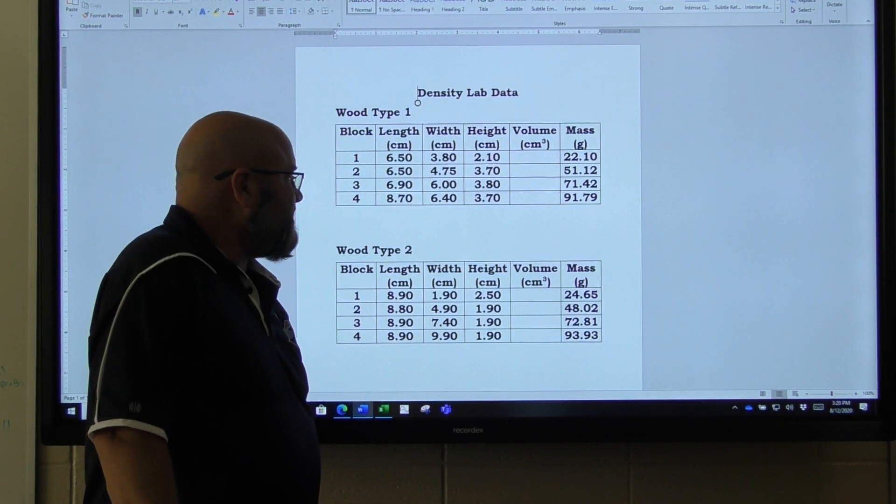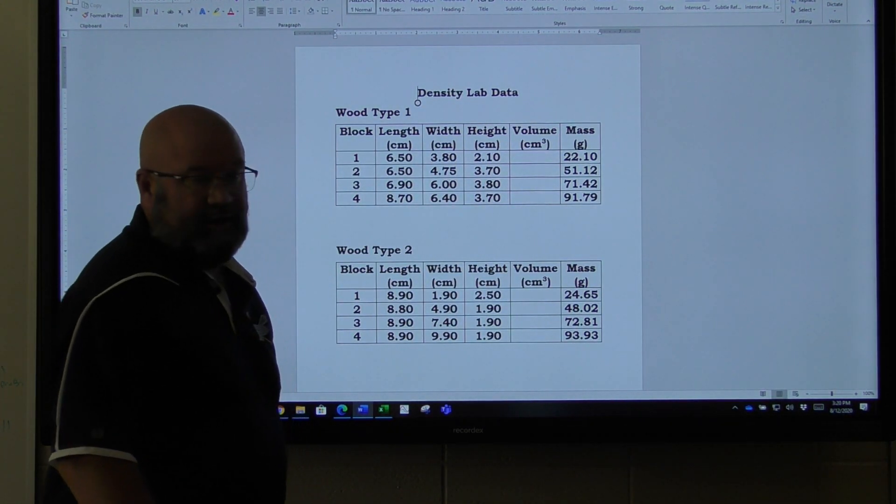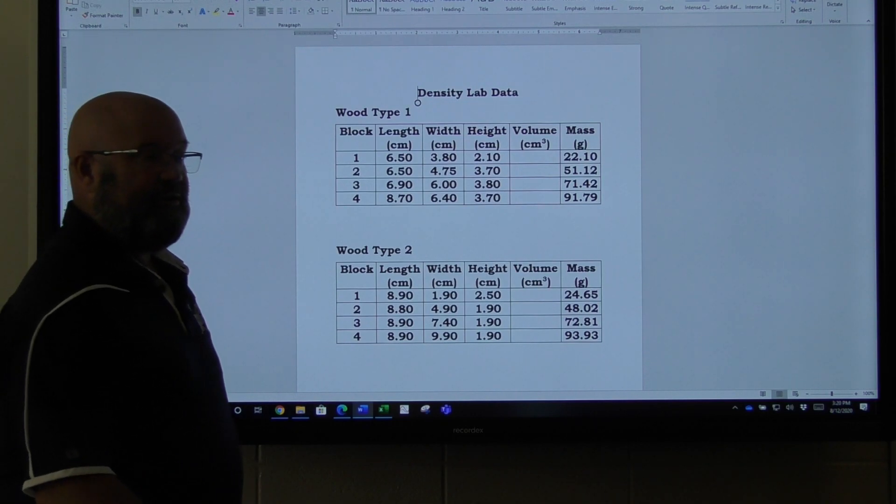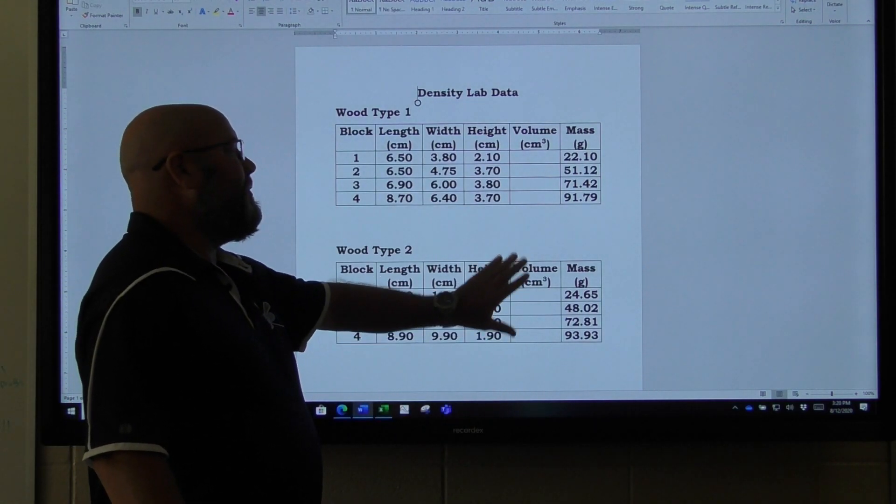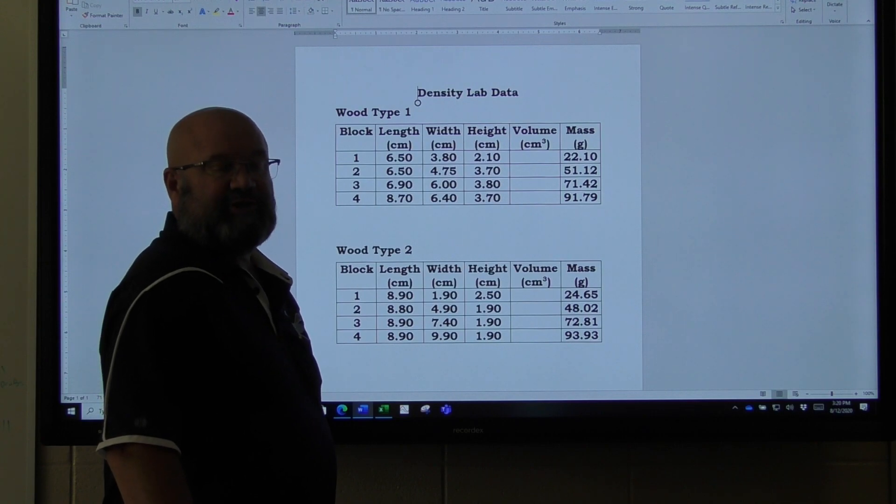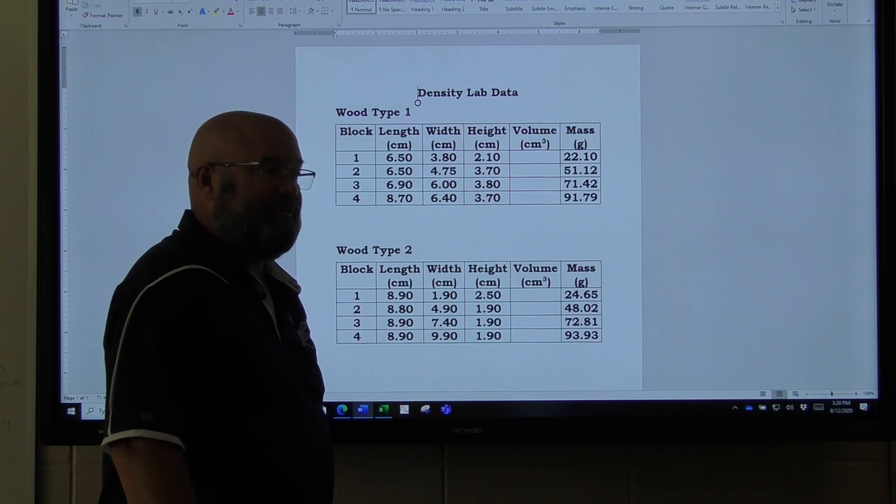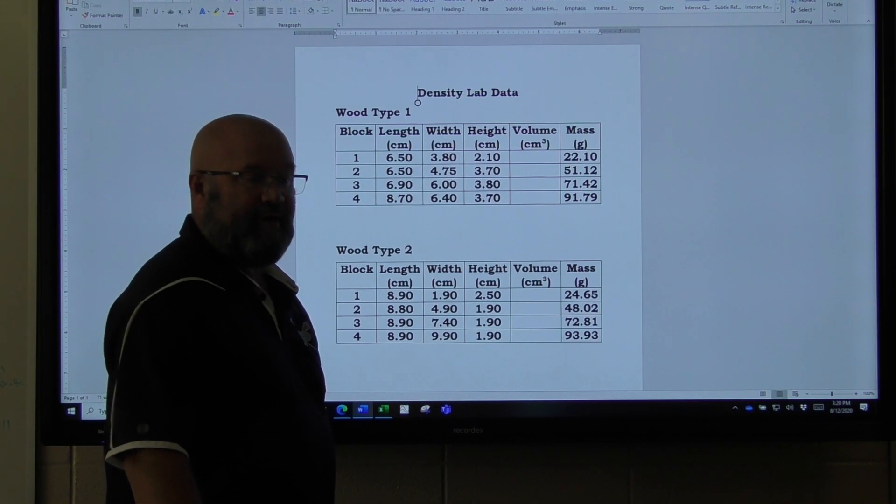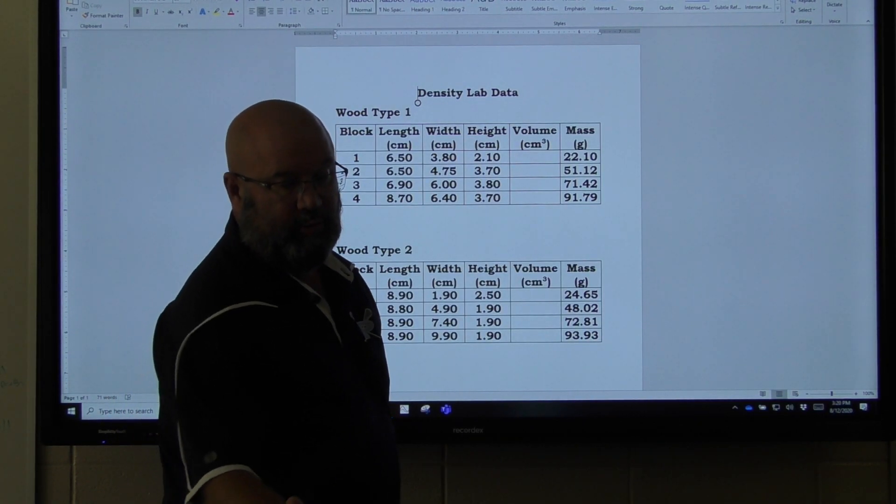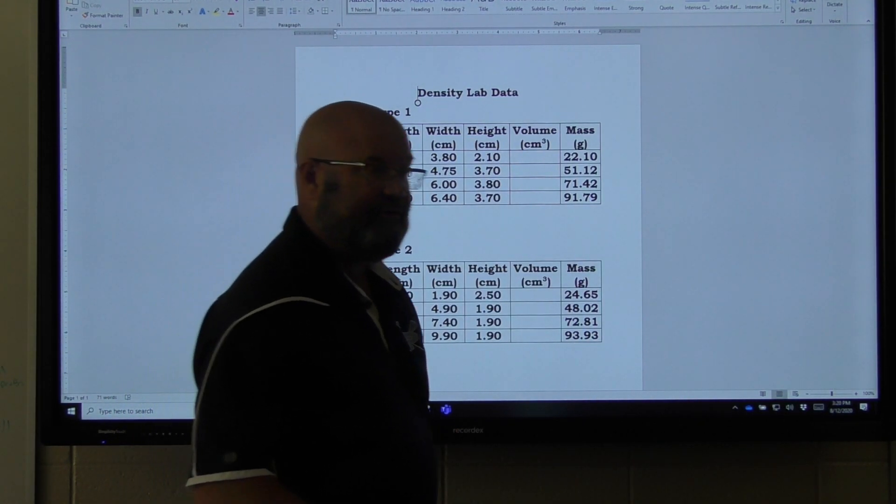So hopefully that's a quick understanding of what we're going to do for lab. You'll analyze the data that I've given you here in the assignment section. Then once you do that, you will be able to continue on, make that graph, find the density of the first type of wood and the second type of wood, and then compare those.